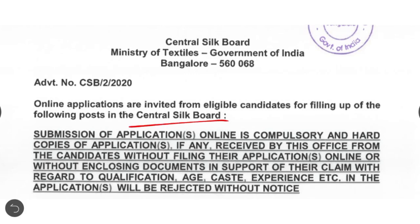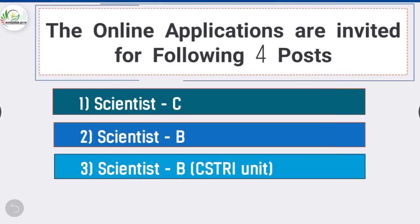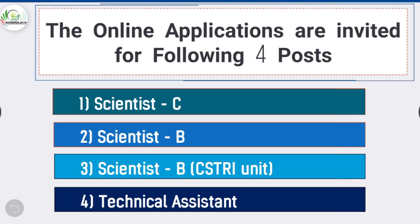Online applications are invited for total four types of post, namely: first one is Scientist C, second one is Scientist B, third one is Scientist B for CSTRI unit — CSTRI unit means Central Silk Technological Research Institute — and the fourth one is Technical Assistant.